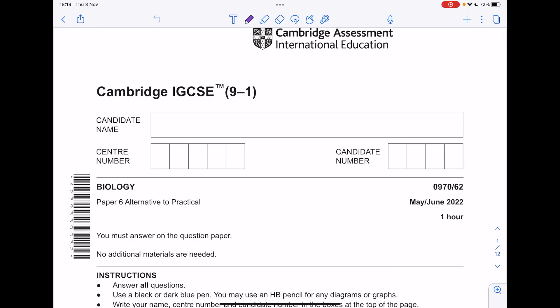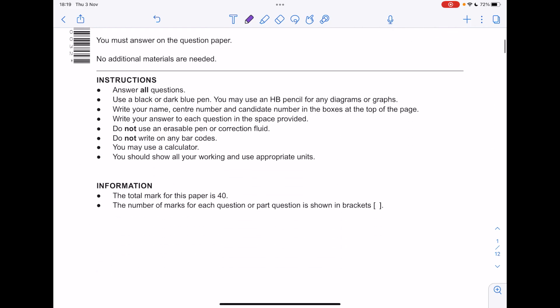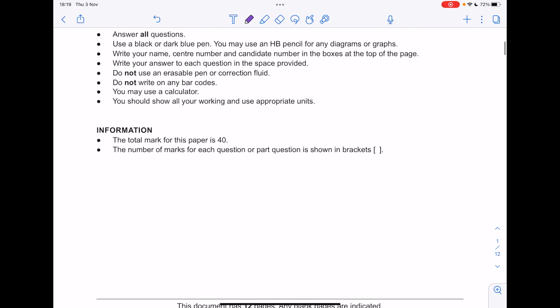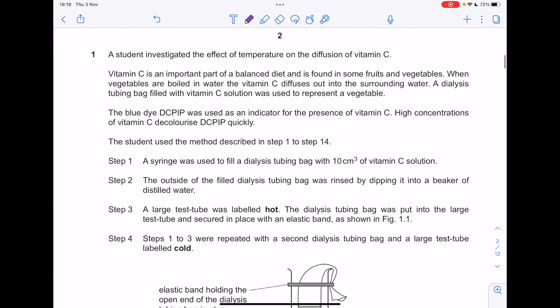This is a Cambridge IGCSE biology paper talk-through, paper 6, the alternative to practical from June 22. A student investigated the effect of temperature on the diffusion of vitamin C. Vitamin C is an important part of a balanced diet and is found in some fruits and vegetables.